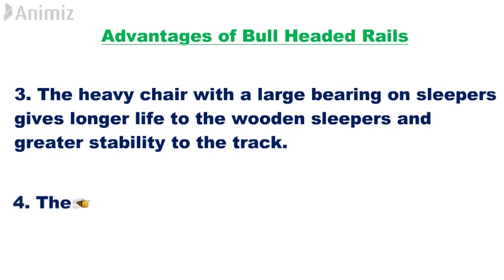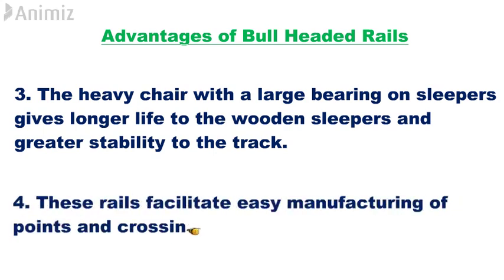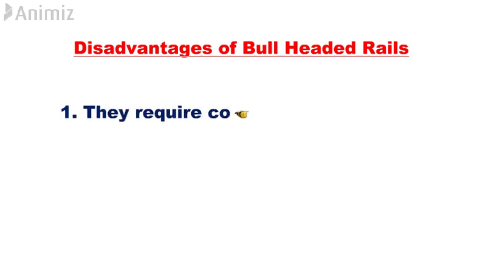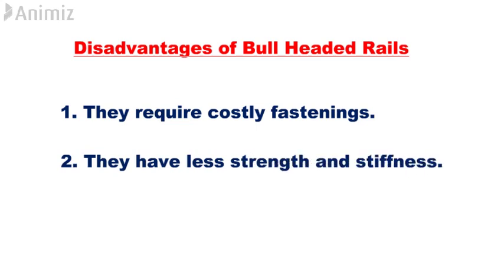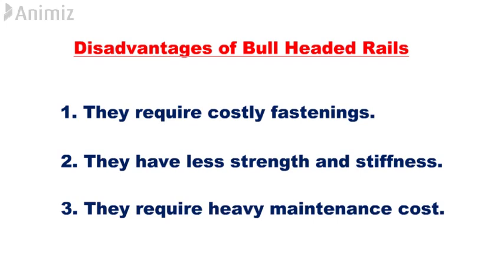4. These rails facilitate easy manufacturing of points and crossings. Disadvantages of bull-headed rails: 1. They require costly fastenings. 2. They have less strength and stiffness. 3. They require heavy maintenance cost.